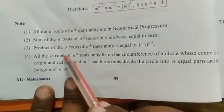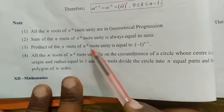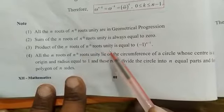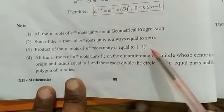The product of the n roots of nth root of unity is equal to minus 1 power n minus 1.